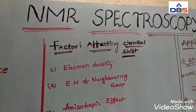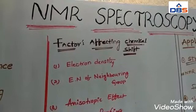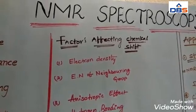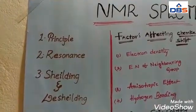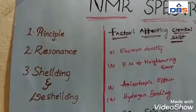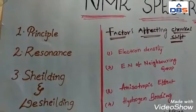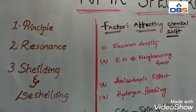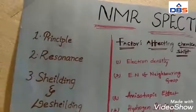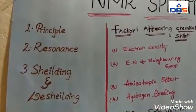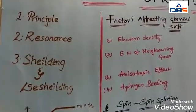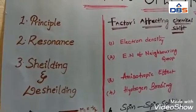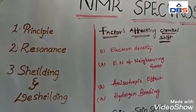NMR spectroscopy is nothing but nuclear magnetic resonance. Now I can explain the main principle of NMR spectroscopy. NMR spectroscopy is a powerful tool for investigation and analyzing the structure of atoms and molecules. In this NMR spectroscopy, the radio frequency waves induce transitions between magnetic energy levels of the nucleus of the molecule. Finally, it forms a spectrum.